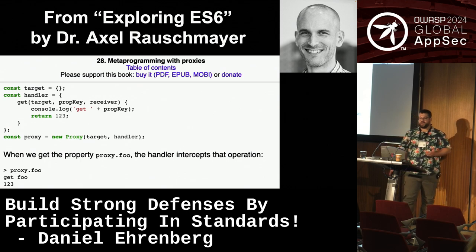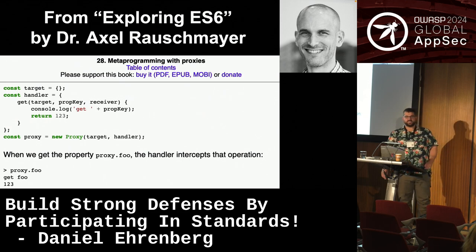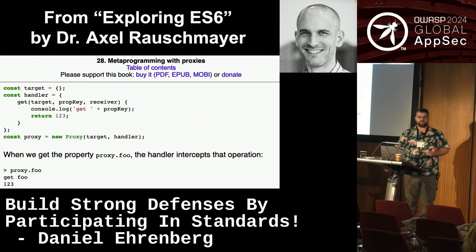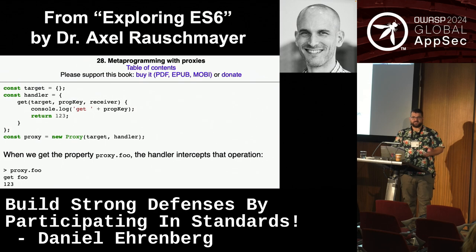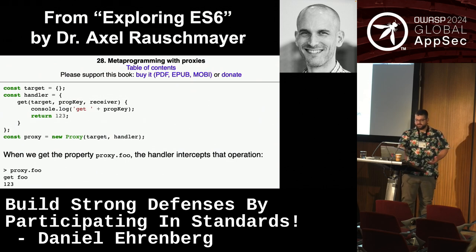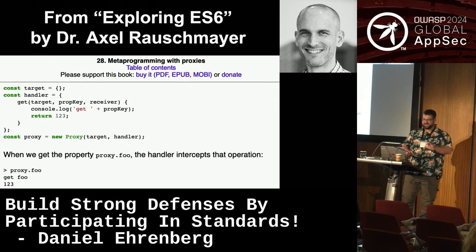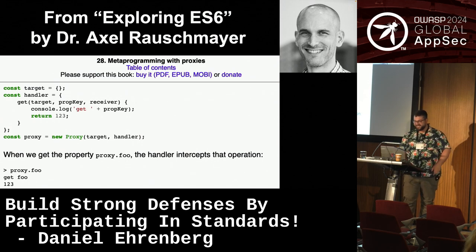Proxies are a way to make an object programmable — like getters in Python. You can make it so that getting a property of an object, even a property name you never thought of, will do some particular behavior. You make this get handler, and then when you access foo, even if foo is listed in the target, it will call this get handler and take that action.